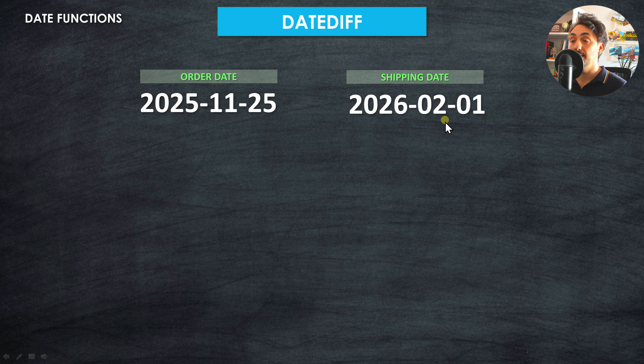The DATEDIFF function has a simple task: subtract two different dates. For example, if you have an order date and a shipping date, DATEDIFF tells you how long it took to ship. The syntax is: DATEDIFF, then the date part, then the start date (order date), then the end date (shipping date). The output is always a number.